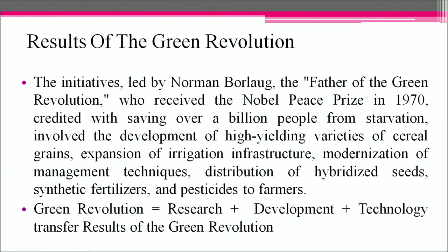The results of the green revolution: the initiative led by Norman Borlaug, the father of the green revolution, who received the Nobel Peace Prize in 1970, is credited with saving over a billion people from starvation. It involved the development of high yielding varieties of cereal grains, expansion of irrigation infrastructure, modernization of management techniques, distribution of hybridized seeds, synthetic fertilizers and pesticides to farmers. In summary, the green revolution is research plus development plus technology transfer.